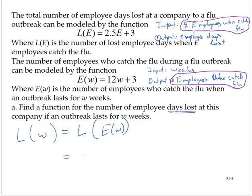That would be 2.5 times something plus 3, and the something in this case is E(W), which is 12W + 3.